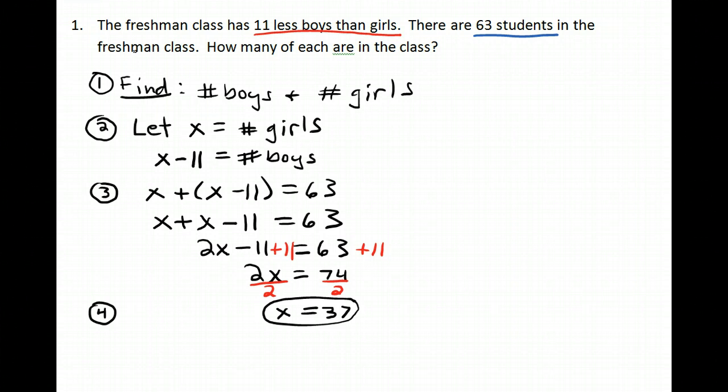But I also need to consider that I'm supposed to find the boys and the girls. So I know that there are thirty-seven girls, but I also need x minus eleven, which is thirty-seven minus eleven, which is twenty-six. So write both of those down, circle them, and then go over to the right and write your number four.